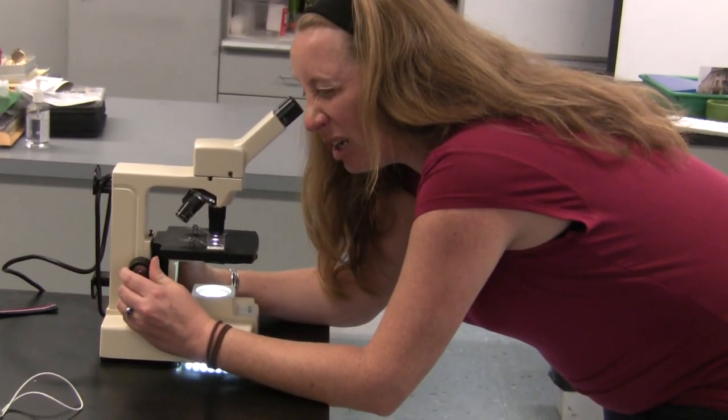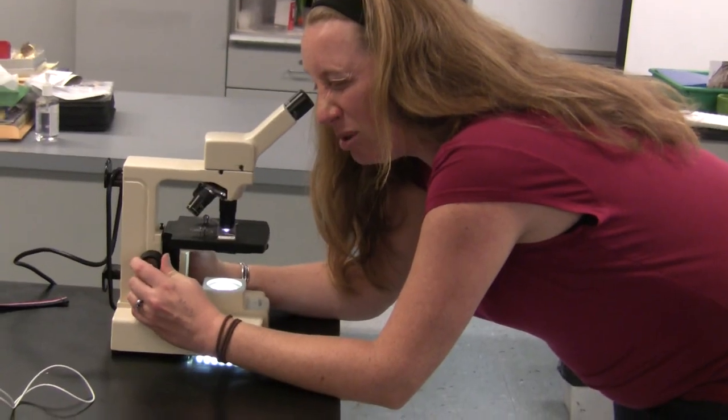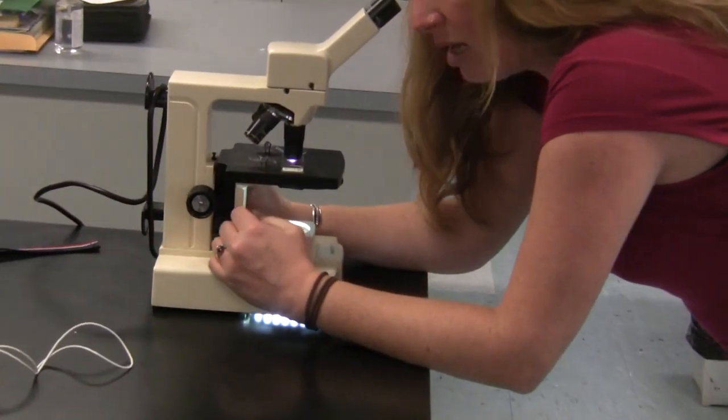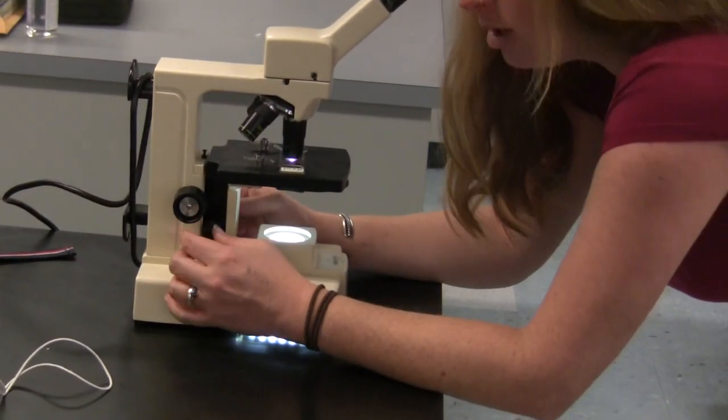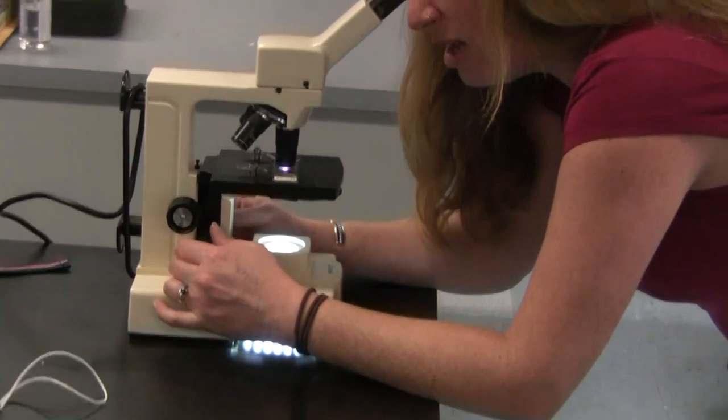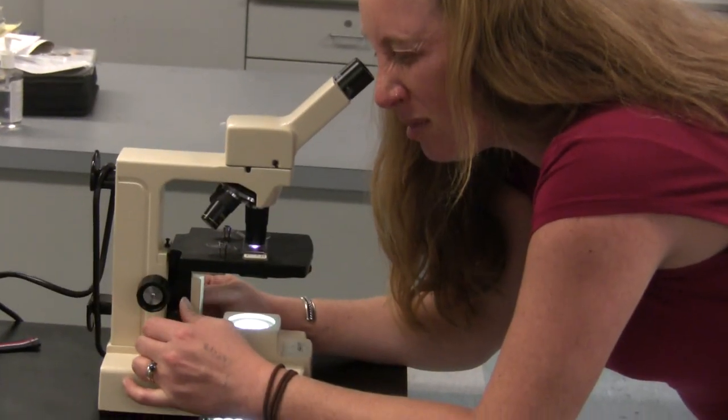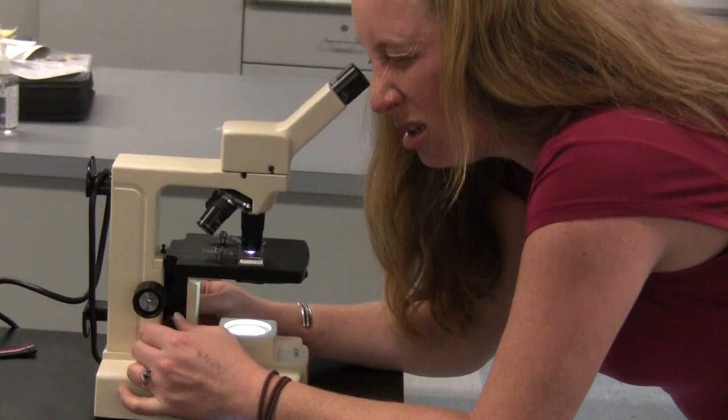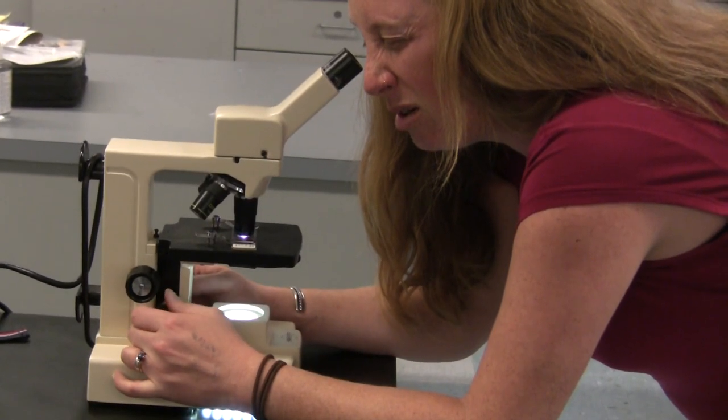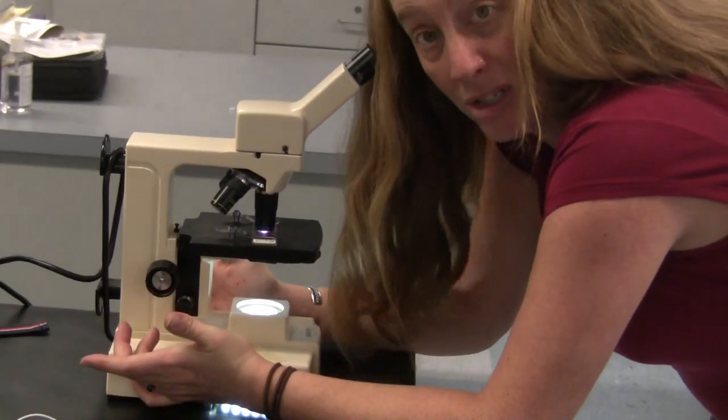You're looking through, you're bringing the stage up using the coarse adjustment knob. And if you can't see it too well, try the fine adjustment knob and bring that up until voila, you can see what you want to see.